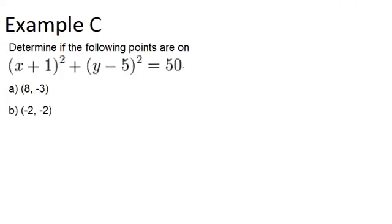In example C, it says determine if the following points are on, and then we have the equation of a circle here. So if a point is on a circle, it means that it will satisfy the equation of the circle. Just like a point being on any line or curve. It's the same thing. So the way you can test that is take the point and substitute it in for x and y in the equation and see if it makes the equation true.